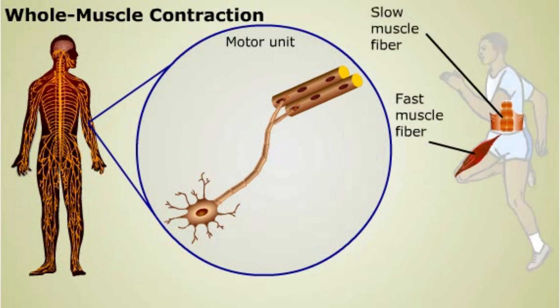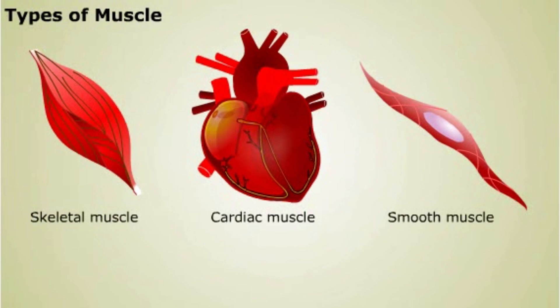The strength of muscle contraction is also regulated by which and how many motor units contract. And the length of contraction is regulated by how long calcium is present. While the basic mechanism for muscle contraction is the same in all types of muscle, there are some important differences.